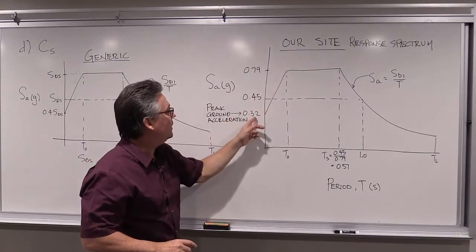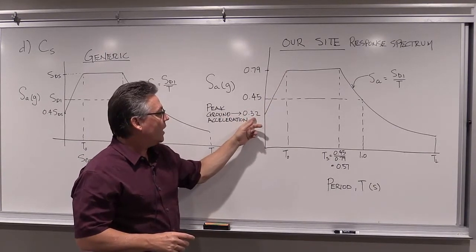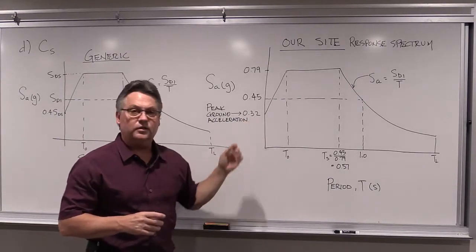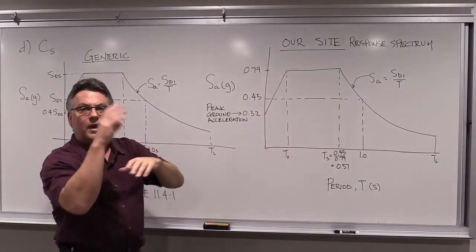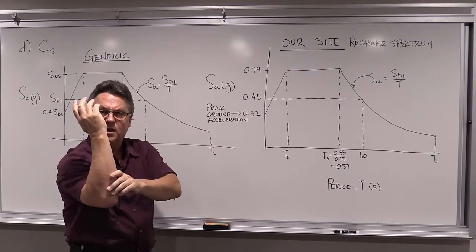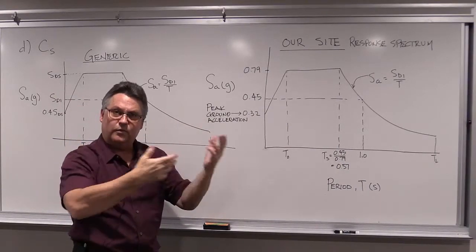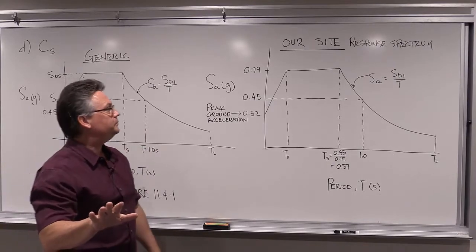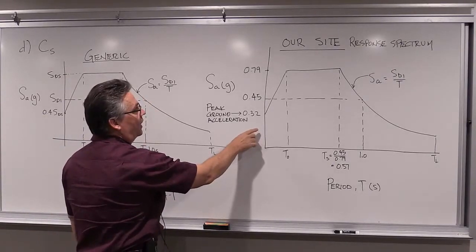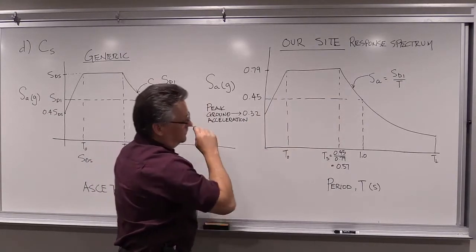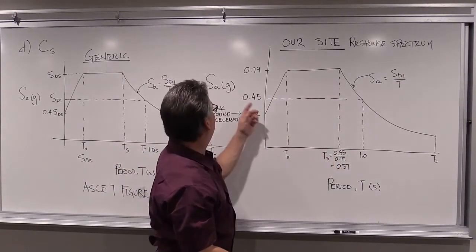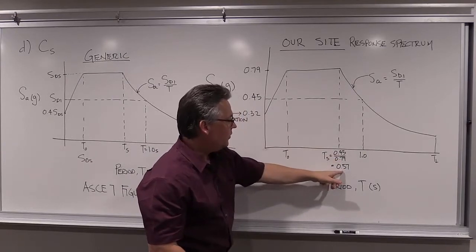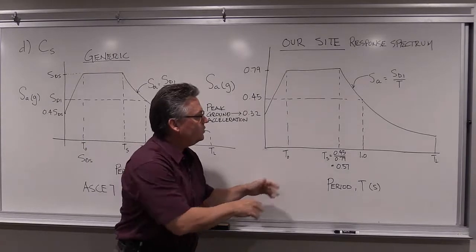I do want you to draw it down to the peak ground acceleration because that is what the ground is doing — if there was a block in the ground going through this earthquake, that's its acceleration. The response spectrum measures the additional response a building has beyond what the ground is doing; it's whipping back and forth. Our site response spectrum: SDS = 0.79, SD1 = 0.45. The short period T_S = SD1 / SDS = 0.45 / 0.79 = 0.57 seconds. That is how I want you to set this up.